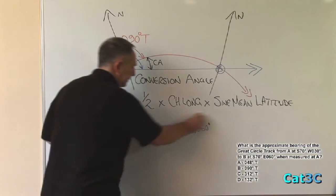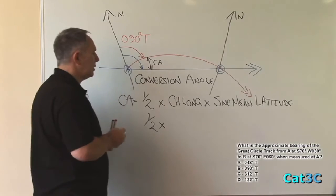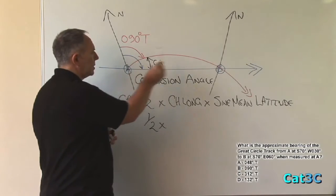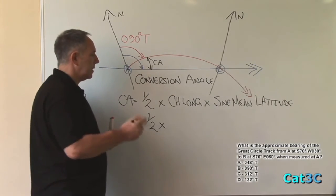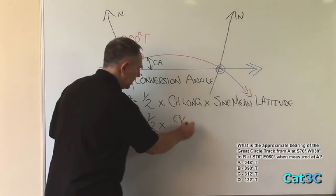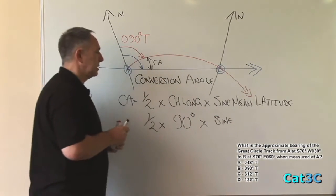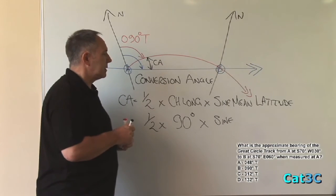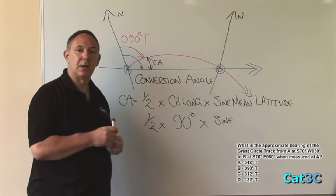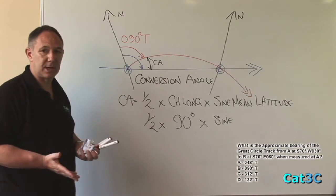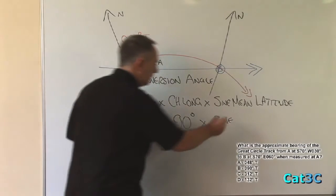So let's fill some numbers in. Half times the change of longitude. Well, the longitudes are West 30 and East 60, opposite hemispheres, so we add them together. 30 plus 60 is 90 degrees. Multiplied by the sine of the mean latitude. The mean latitude is obtained by taking the two latitudes together, adding them, and then dividing by 2. But in this case, they're both the same in any case. So 70 plus 70 is 140, divided by 2 is 70 degrees.